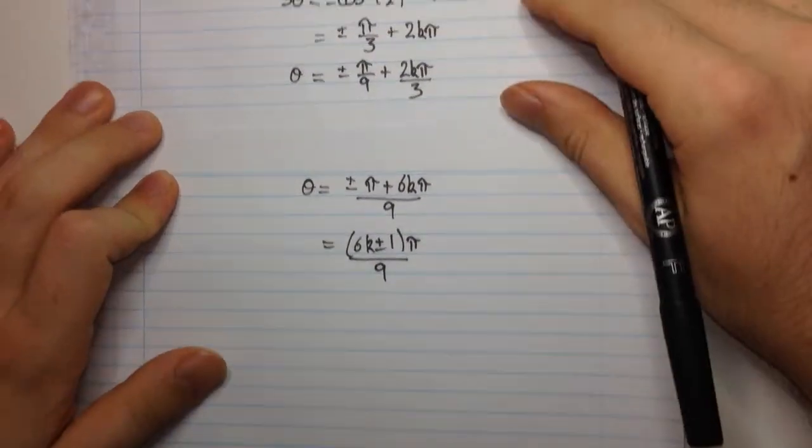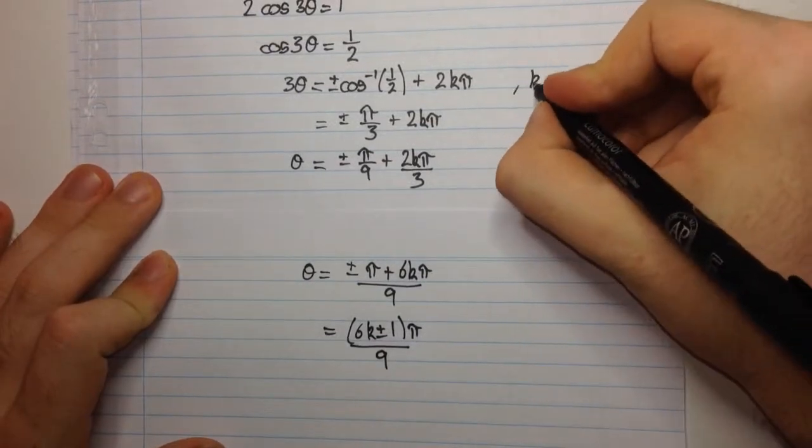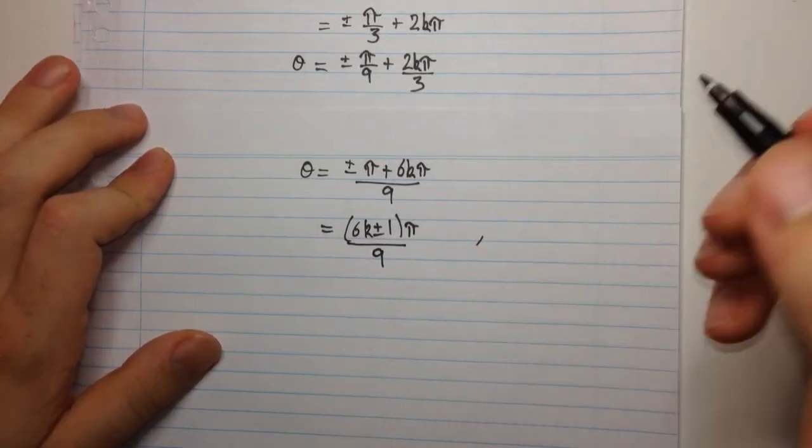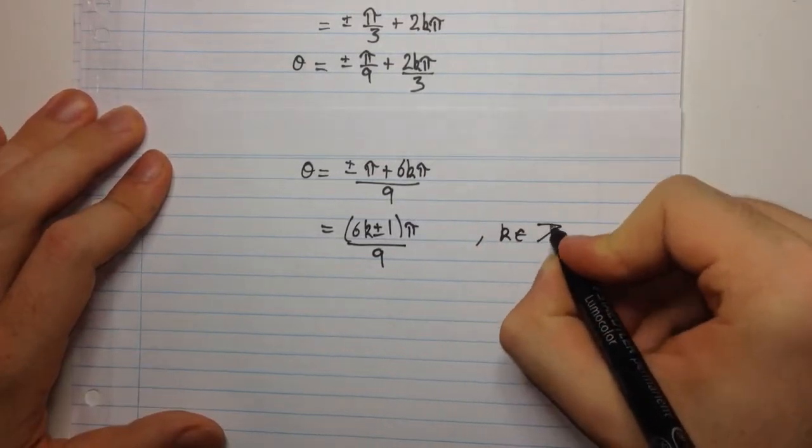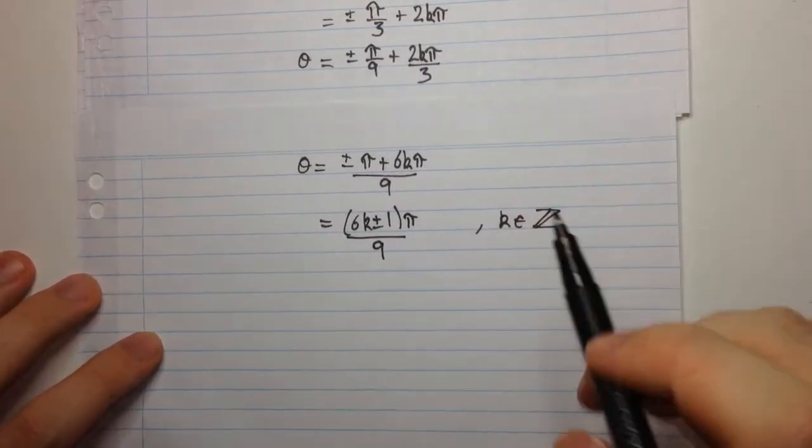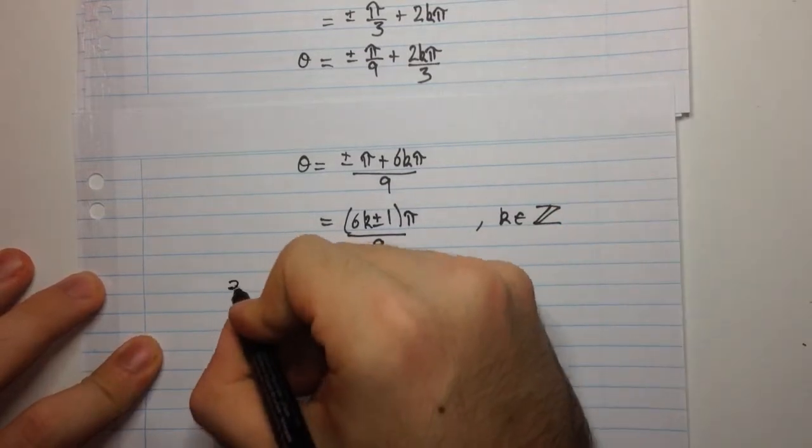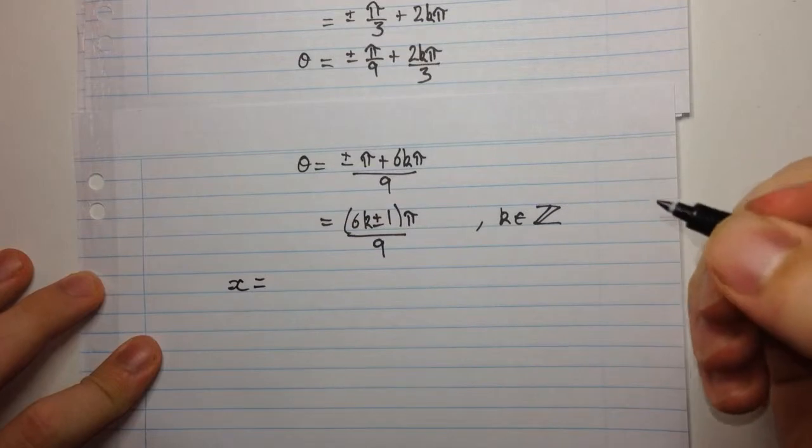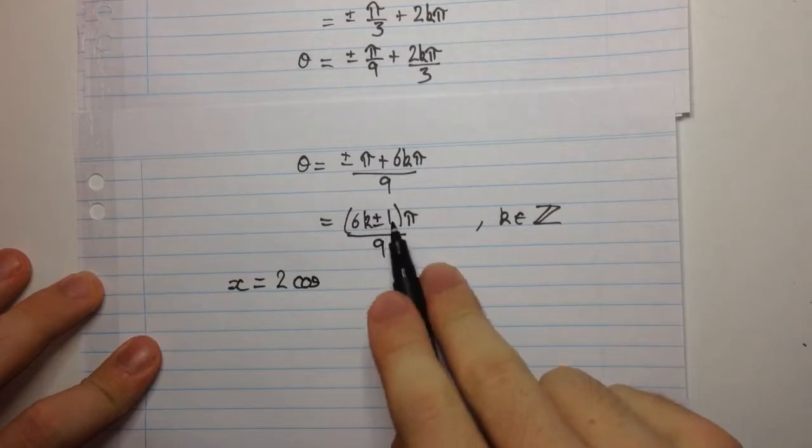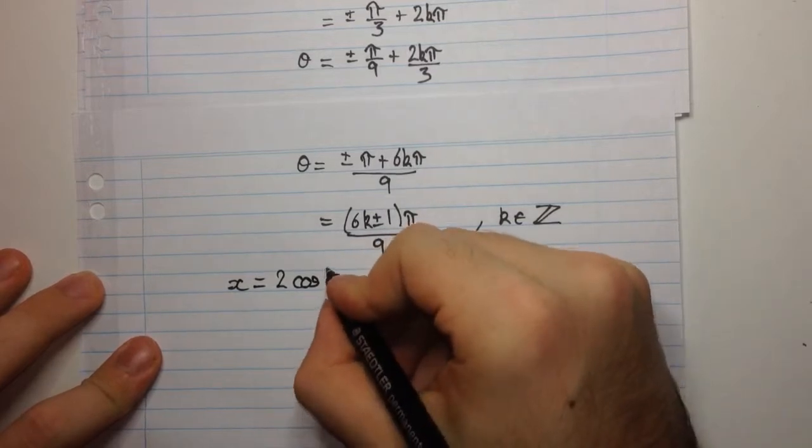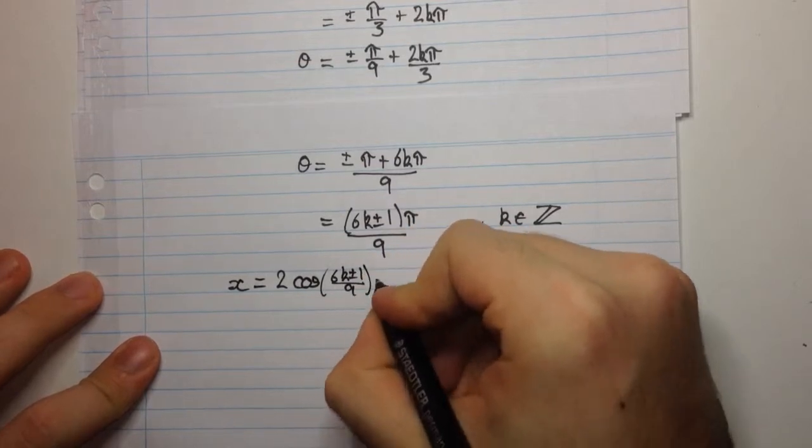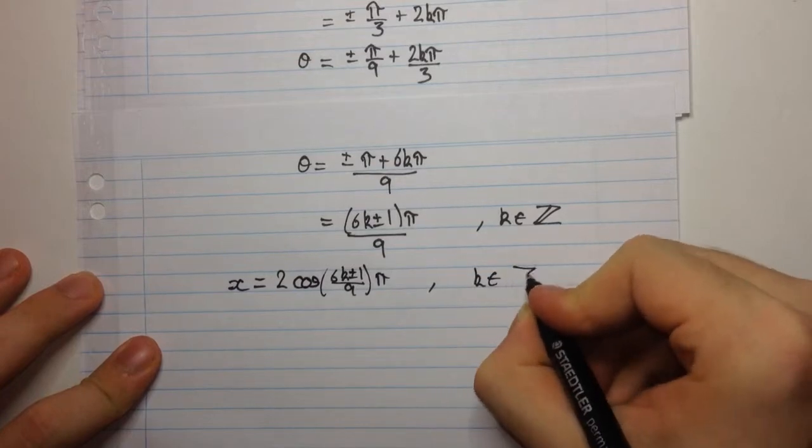And I forgot to mention up here that k was an integer. So, we should probably write it in each step that you have k, but I'll just write it in these two steps. So, k is an integer. So, our solutions for our polynomial were of the form x equals kcosθ, but we decided that our k was going to be 2, so they're going to be 2cosθ. But what's θ? Θ is this angle here.